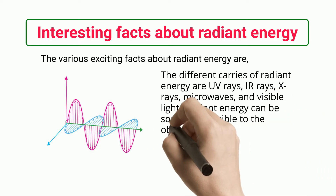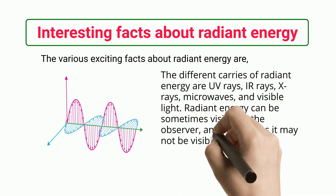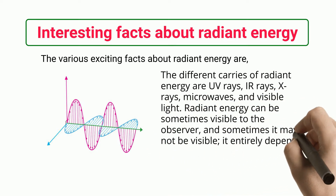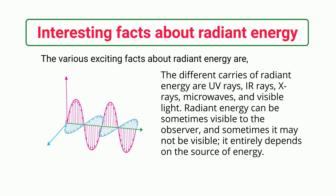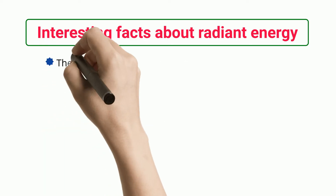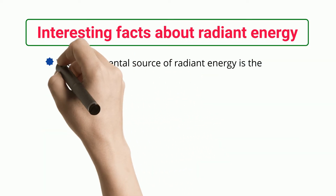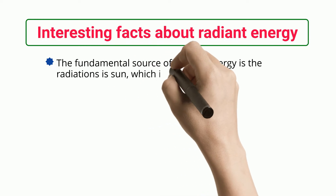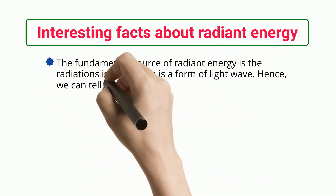Radiant energy can be sometimes visible to the observer, and sometimes it may not be visible — it entirely depends on the source of energy. The fundamental source of radiant energy is the sun, which is a form of light wave.